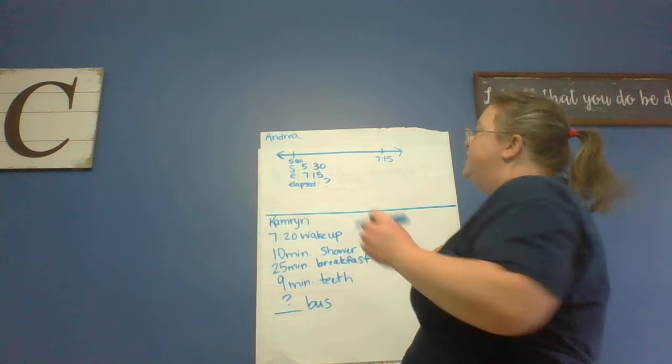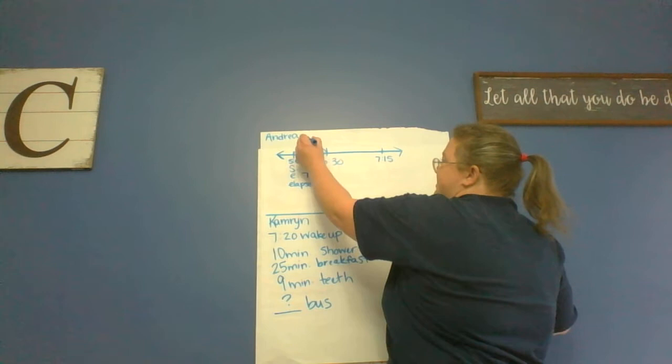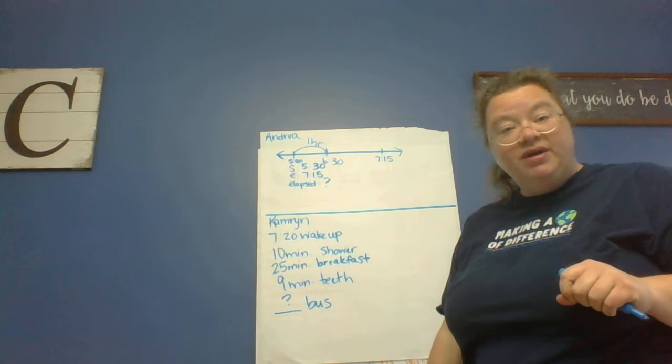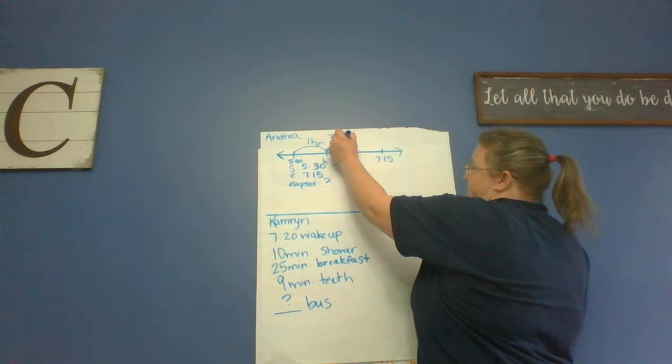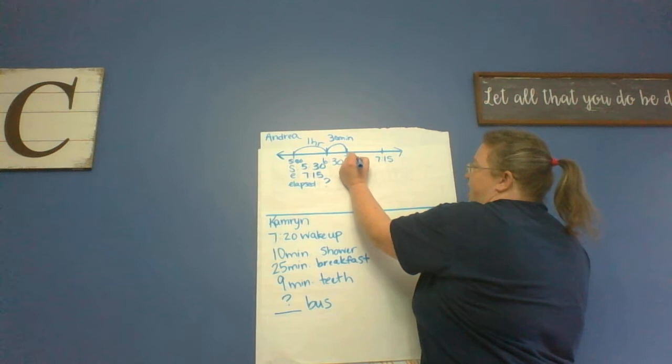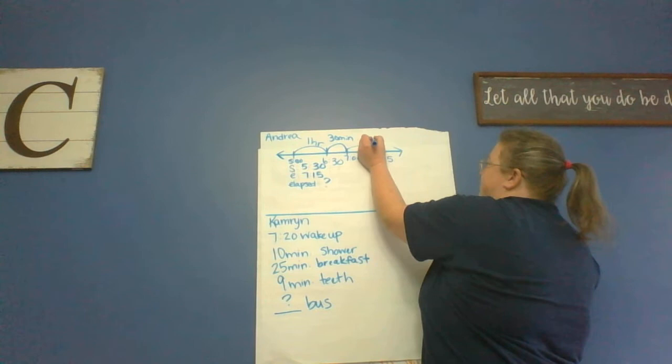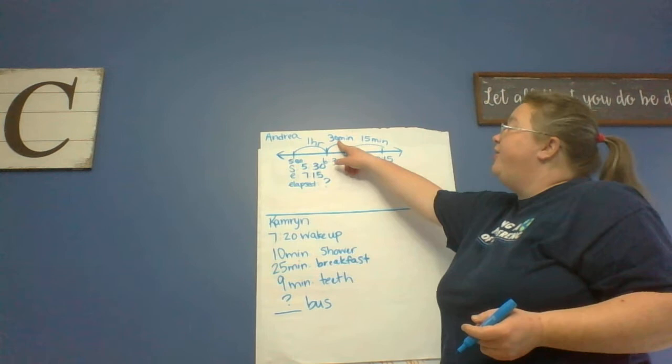Now I notice I have 30 minutes and 15 minutes, so I'm going to start sticking with 30 minutes until I have to change. So I'm going to go one hour, that would be 6:30. Now if I went another hour to 7:30, would that work? No, that would be too much time. So let's go a half hour. If I go 30 minutes, 6:30 plus 30 minutes would be 7 o'clock. Oh look, 7 to 7:15 is 15 minutes. So if I add those together, I have one hour and 30 plus 15, which is 45 minutes. So she played soccer for one hour and 45 minutes.